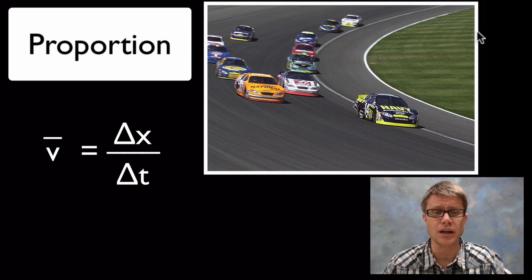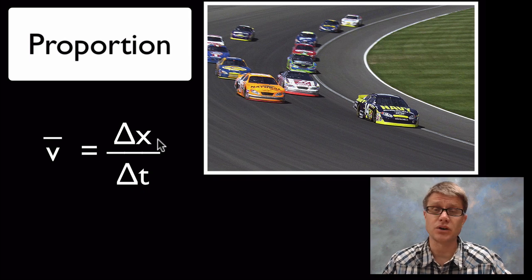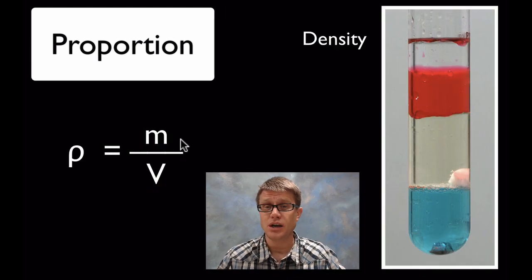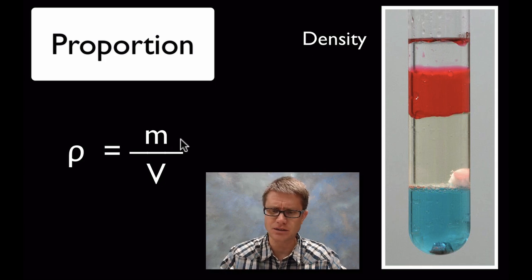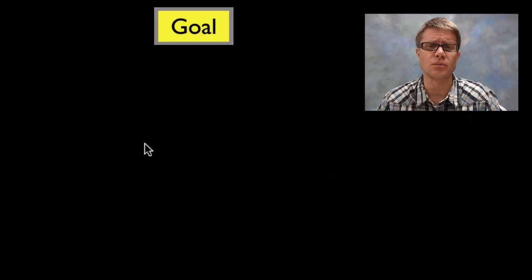A ratio could also allow us to move between different units. Velocity is going to be a change in position over a change in time. And that's a proportion. But it's allowing us to move between different scales. Or density as well is a proportion. It's important that we understand that a scale doesn't have to be distance over distance or unit over unit. It can be different units as well. This quantity and understanding the units is super important.